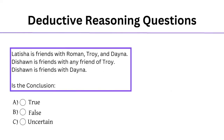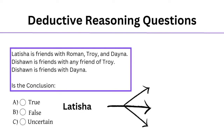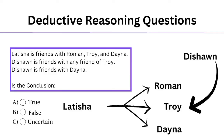Our final question is in the same style — two statements and one conclusion. For our visual, we will use arrows. Leticia is friends with Roman, Troy, and Dana. Deshawn is friends with any friend of Troy. And our conclusion: Deshawn is friends with Dana. Looking at our visuals, we see a connection, but nothing explicit. We may be tempted to group these people as one big friend group, but that would be an assumption. It doesn't explicitly say that Troy is friends with Dana, only that Leticia is friends with both of them. Since the question is not asking about mutual friends, and we have no way of knowing if the conclusion is true or not based on the information provided, our final answer will be uncertain.